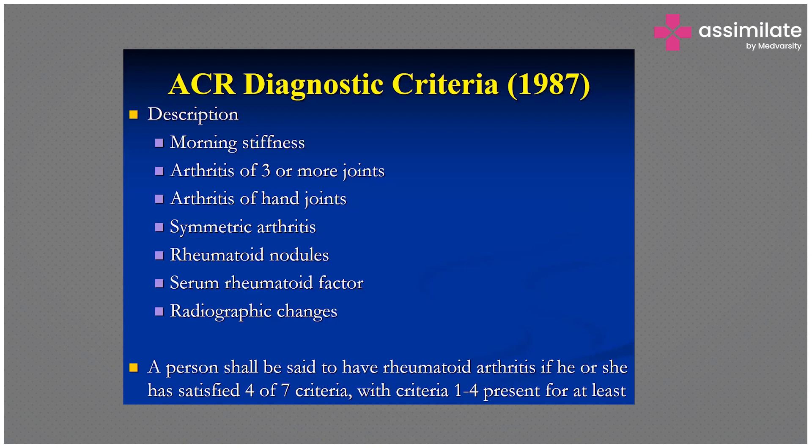Additional criteria include presence of rheumatoid nodules, serum rheumatoid factor, and radiographic changes. A person is considered to have rheumatoid arthritis if they satisfy four of seven criteria, with criteria one through four — stiffness, arthritis of three or more joints, arthritis of the hand joints, and symmetric arthritis — present for at least six weeks.